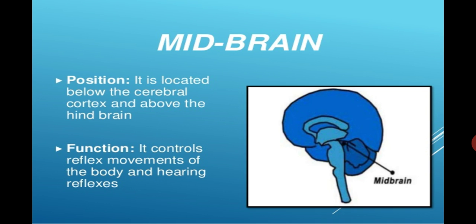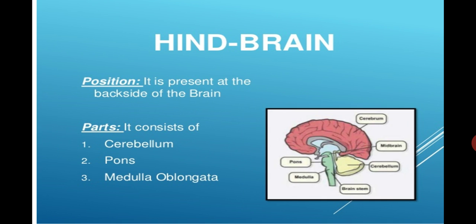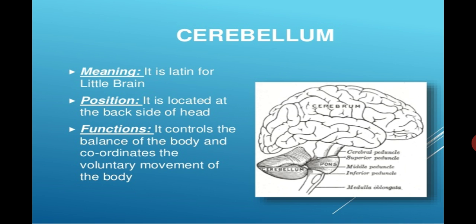Now we will talk about the hindbrain. It is present at the back side of the brain and consists of cerebellum, pons, and medulla oblongata. These are the three divisions of the hindbrain. First of all, the cerebellum. It is the Latin for little brain and is located at the back side of the head. It controls the balance of the body and coordinates voluntary movements.